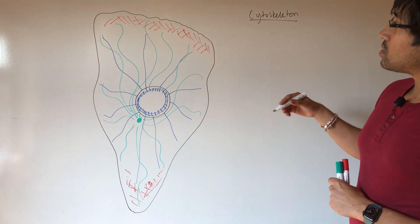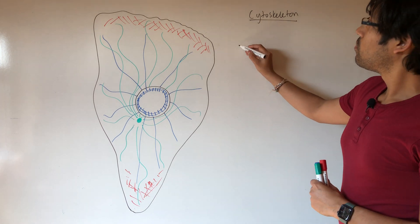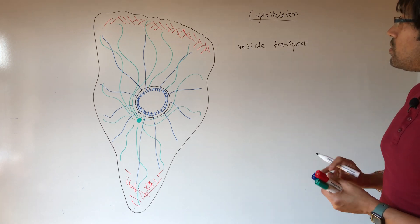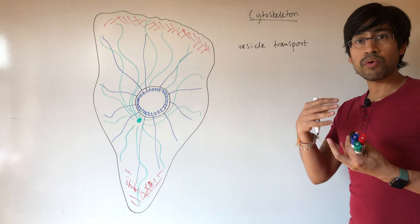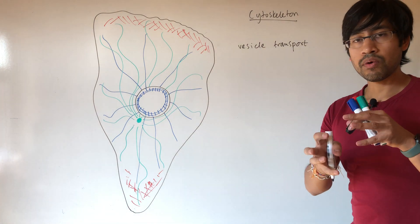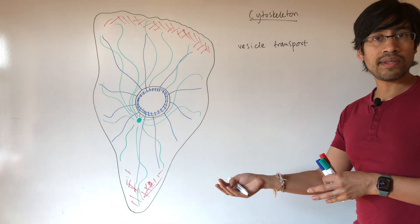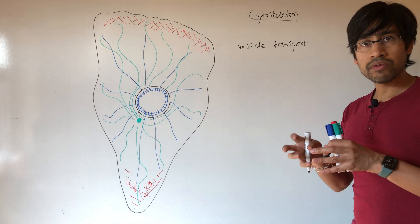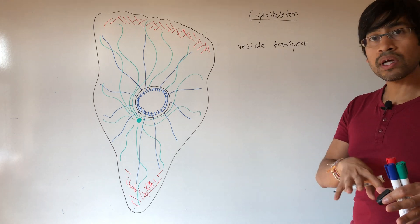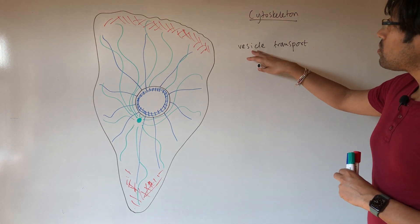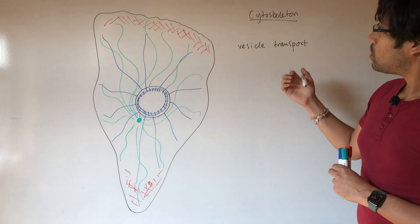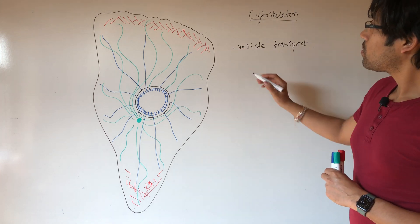For example, we have functions such as vesicle transport. When we looked at protein synthesis and the organelles involved in protein synthesis, vesicles that get transported from one part of the cell to another or one organelle to another, it happens along or using the cytoskeletal networks. So we have vesicle transport.